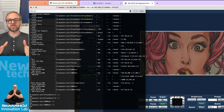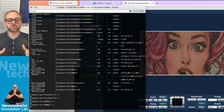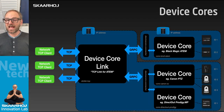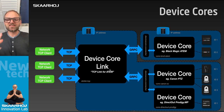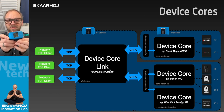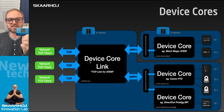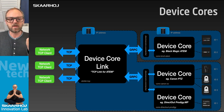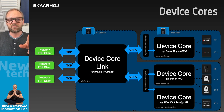You have just seen four different devices controlled through the same TCP connection with human-readable text commands, and that's what Device Core Link is about. This slide shows how it works inside the BluePill — this little device hosts all the software and is talking to cameras and switchers while also offering a TCP interface. The application is called DC Link TCP.